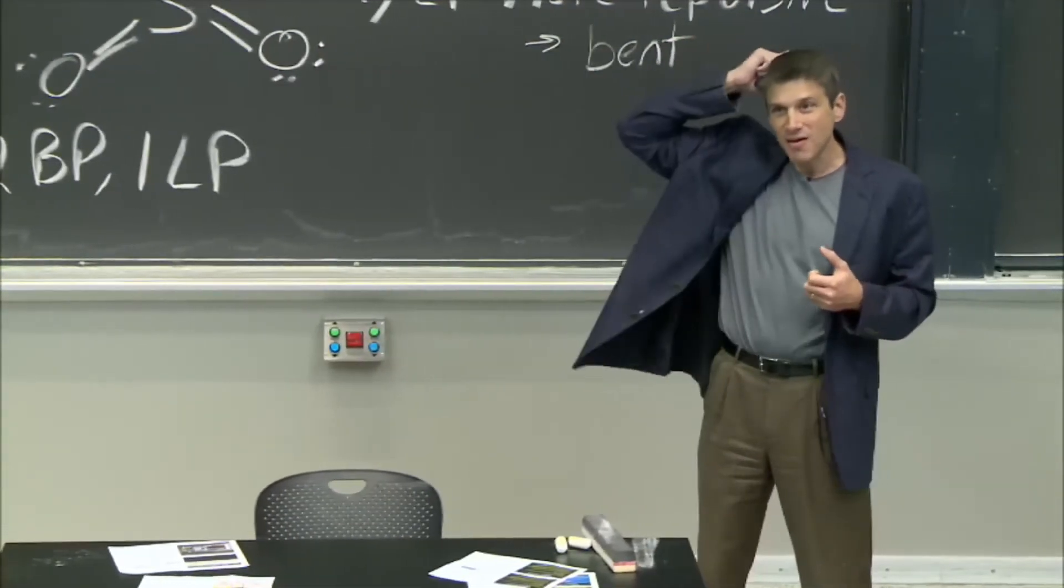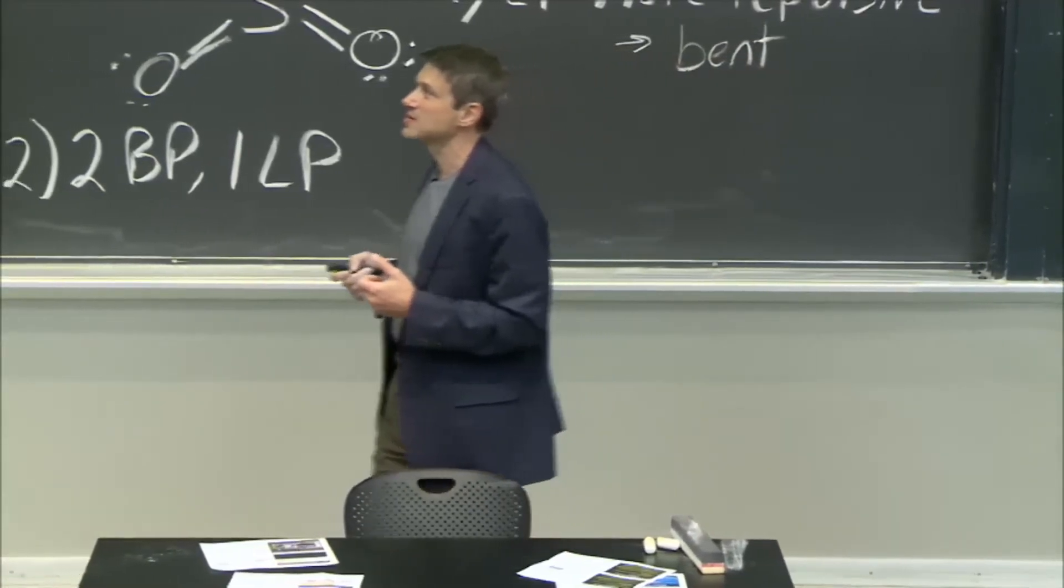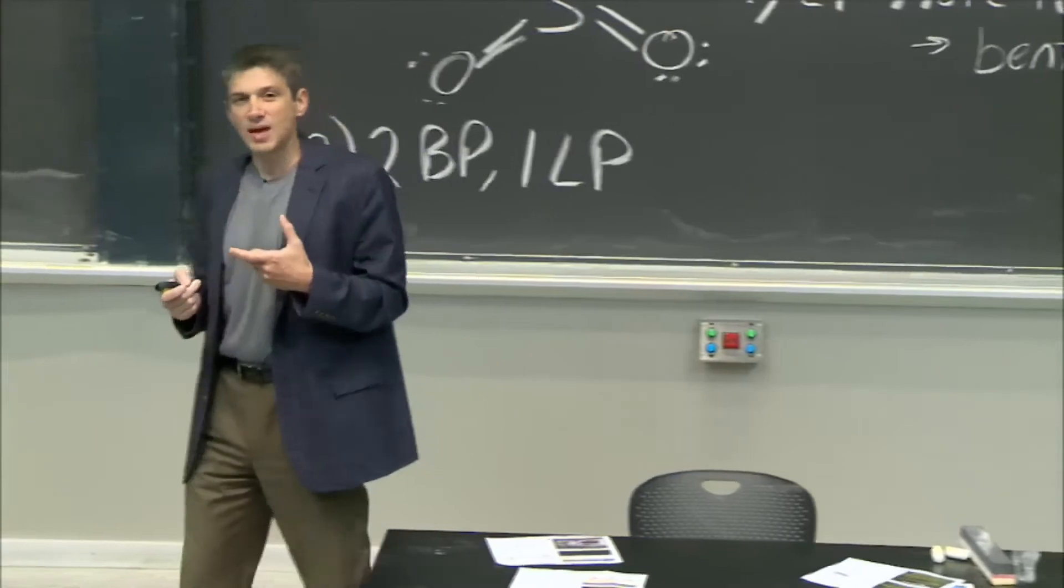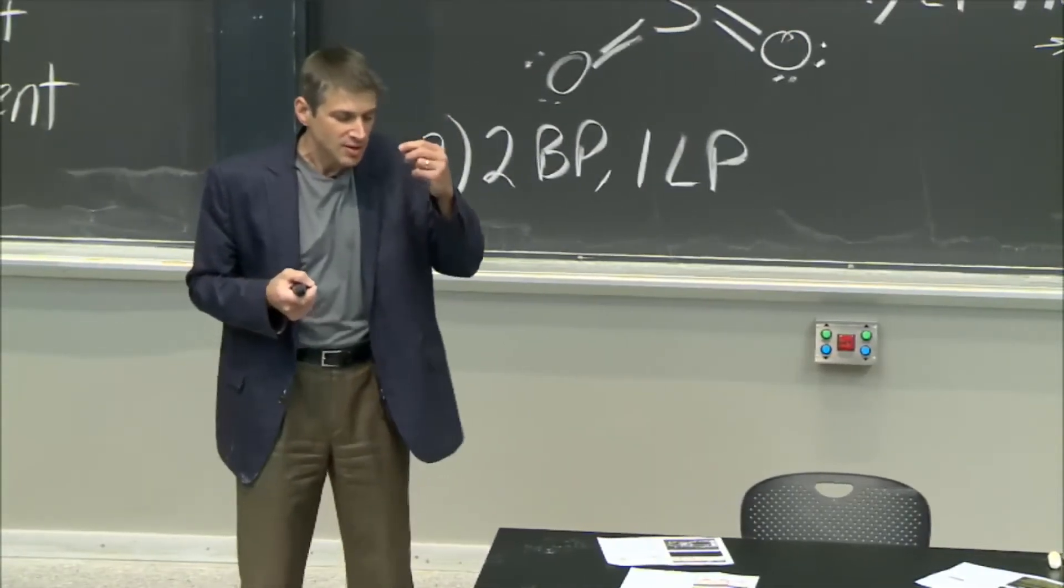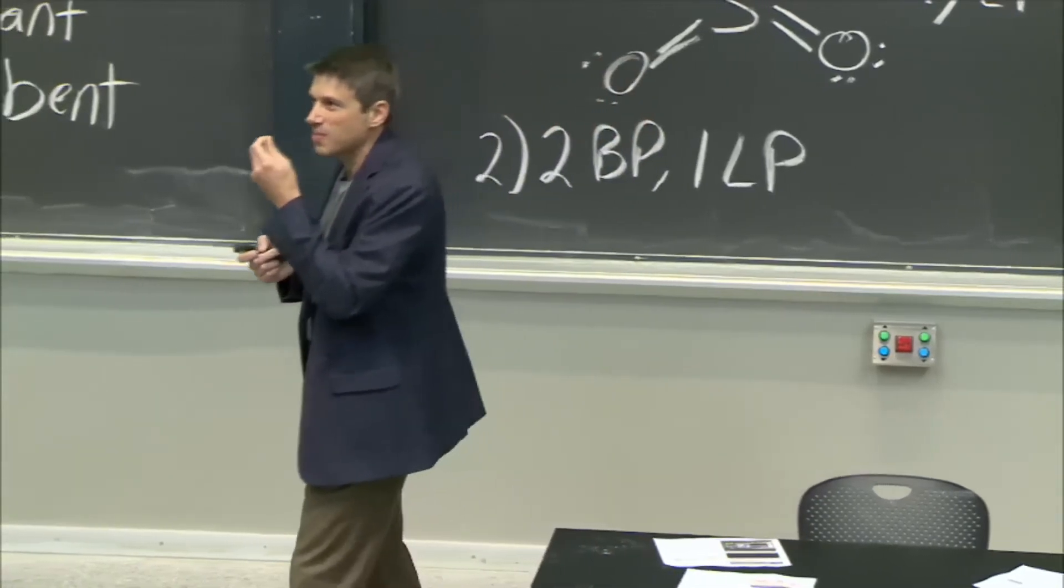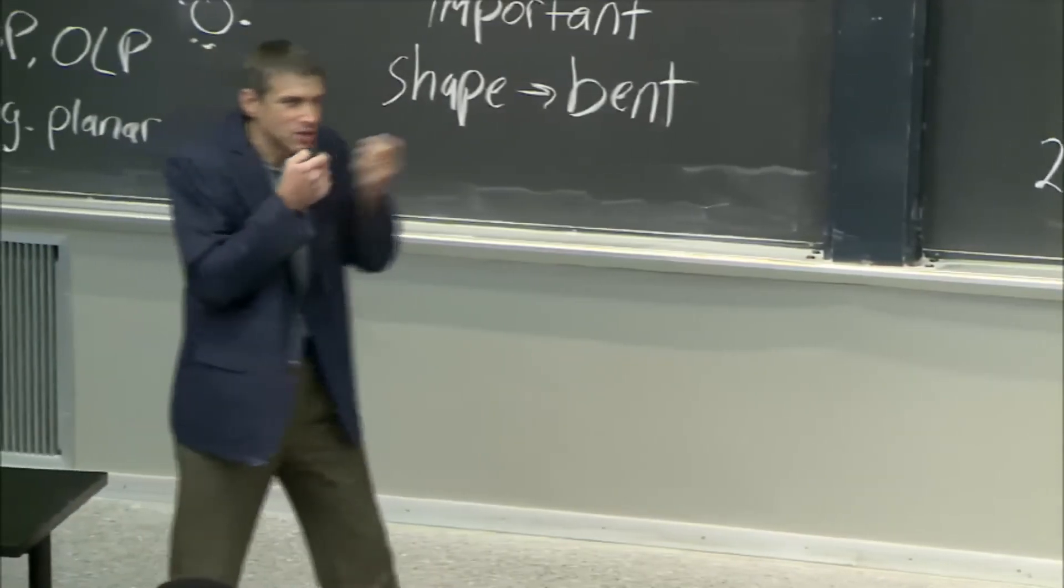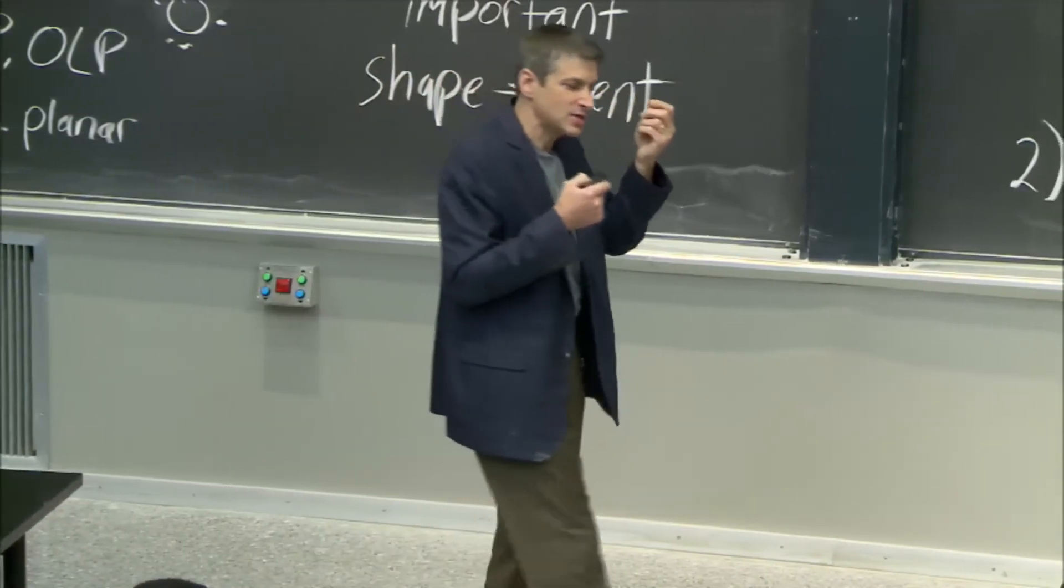And Democritus himself, our friend Democritus said that shape must be involved. He thought that because things that taste bitter are sharp, that the bitter molecules were sharp. They must have sharpness to them and like shards of glass. That's how he imagined it.